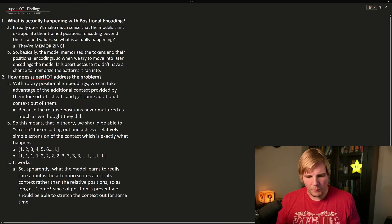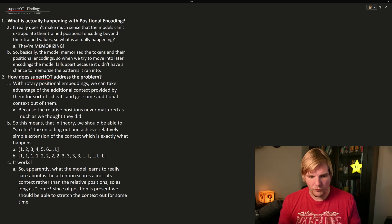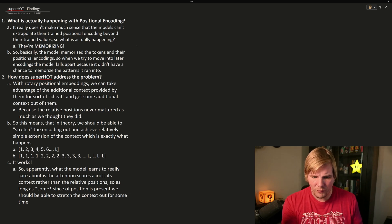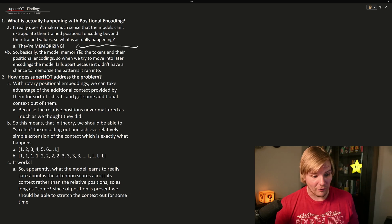So what is actually happening in our positional encoding? Why is it not extrapolating? Well, what Superhot has found is that really what it's doing is it's memorizing all of the tokens in its positional encoding. So basically, the model has memorized the tokens and their positional encoding. So when we try to move past that, it just falls apart.